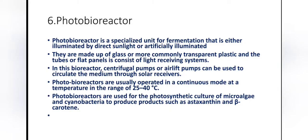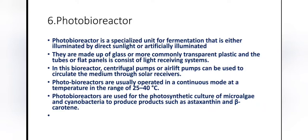The next type is the photobioreactor, which is a specialized unit of fermentation that is either illuminated by direct sunlight or artificially illuminated. Photobioreactors are made of glass or more commonly transparent plastic, and the tubes or flat panels consist of light-receiving systems. Centrifugal pumps or airlift pumps are used to circulate the medium through the solar receivers. They are usually operated continuously at temperatures ranging from 25 to 40 degrees Celsius and are used for photosynthetic culture of microalgae and cyanobacteria to produce products such as beta-carotene and astaxanthin.